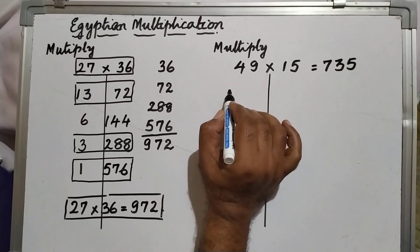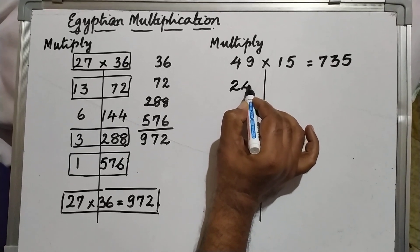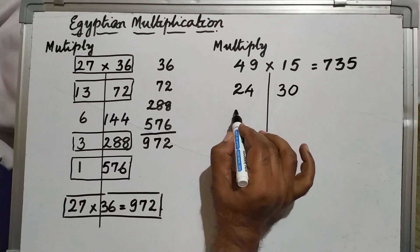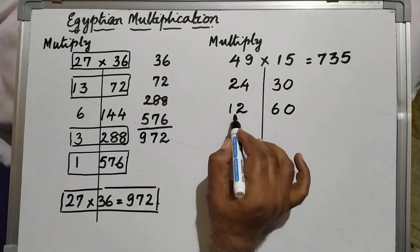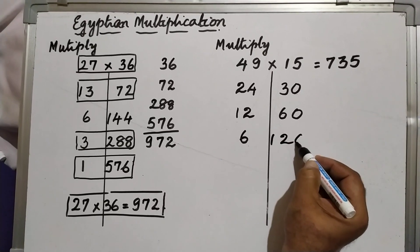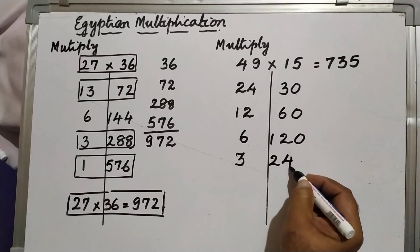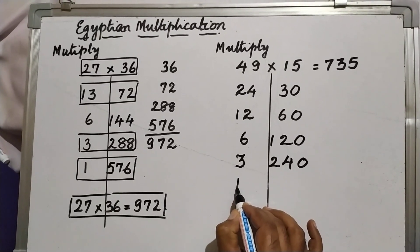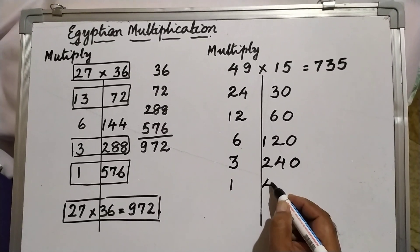49 divided by 2 is 24 and a half. I omit that half and take 24. Doubling 15 gives 30. Half of 24 is 12; double of 30 is 60. Half of 12 is 6; double of 60 is 120. Half of 6 is 3; double of 120 is 240. Half of 3 is 1.5 — the fraction is omitted and 1 is taken. Double of 240 is 480.